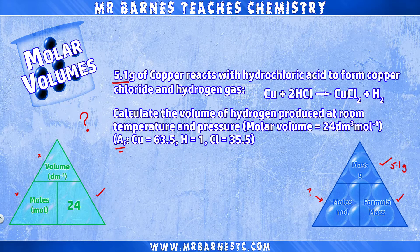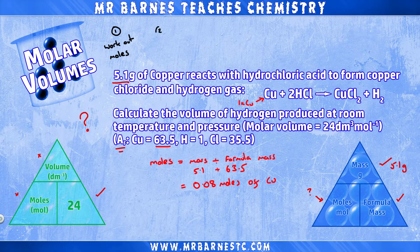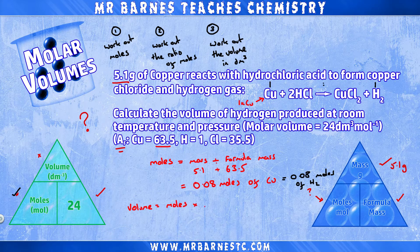Step one: work out the moles. Mass is 5.1 g, formula mass of copper is 63.5, so moles = 5.1 ÷ 63.5 = 0.08 moles. Step two: look at the ratio — copper to hydrogen is 1:1, so I have 0.08 moles of hydrogen. Step three: work out the volume. Back to the original triangle: 0.08 × 24 gives a volume of 1.92 decimetres cubed of hydrogen produced.